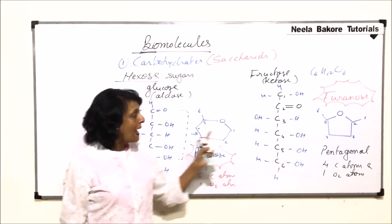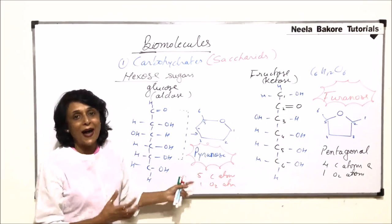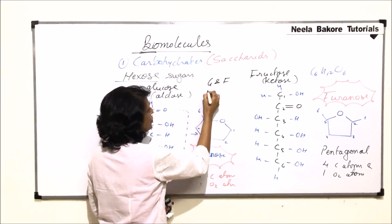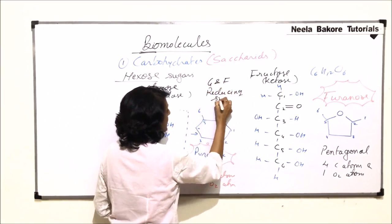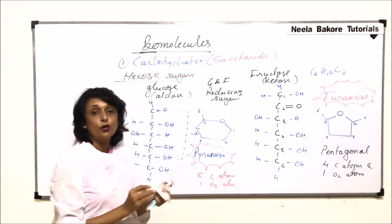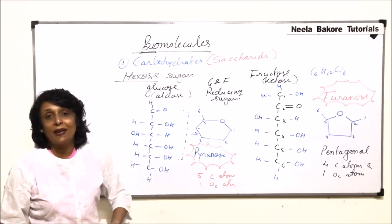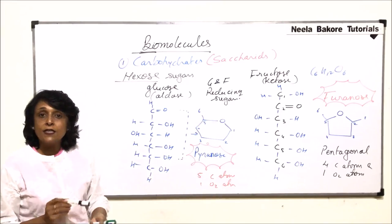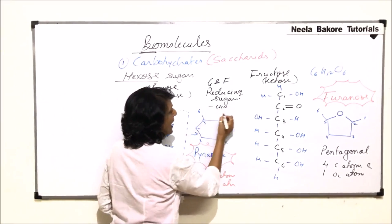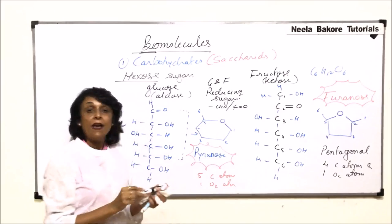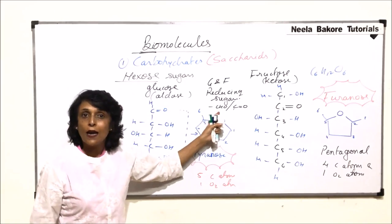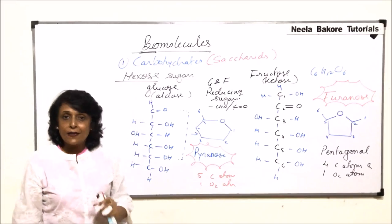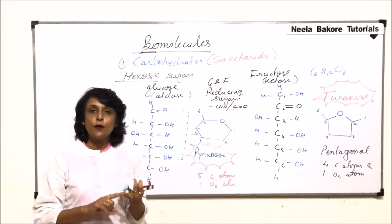Both glucose and fructose are reducing sugars. They are called reducing sugars because they can reduce other substances — for example, they can convert cupric to cuprous. The reason these sugars are reducing is that they have an aldehyde or keto functional group. Any sugar that has an aldehyde or keto group acts as a reducing sugar.